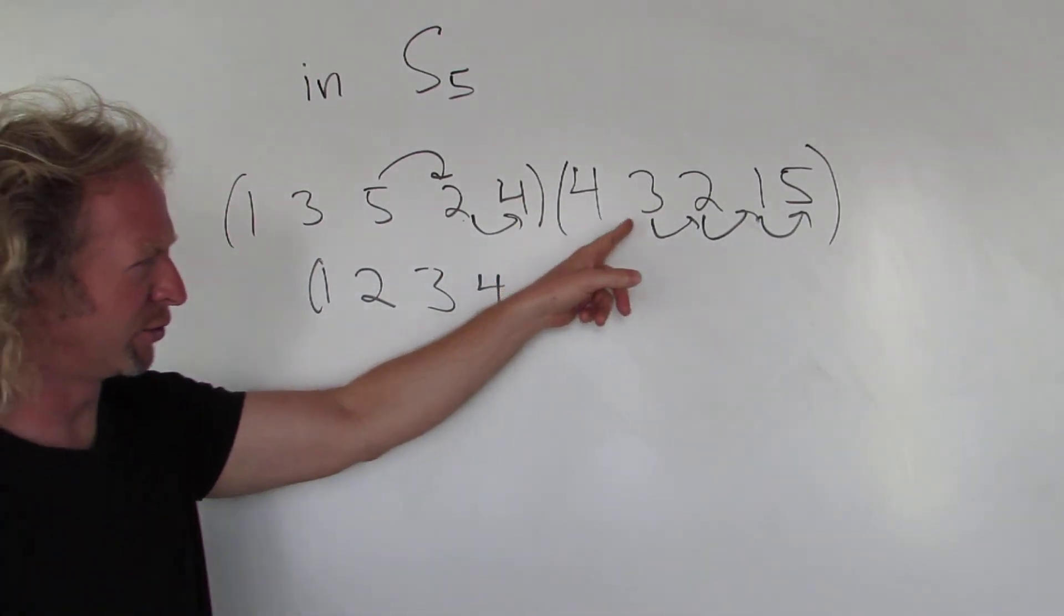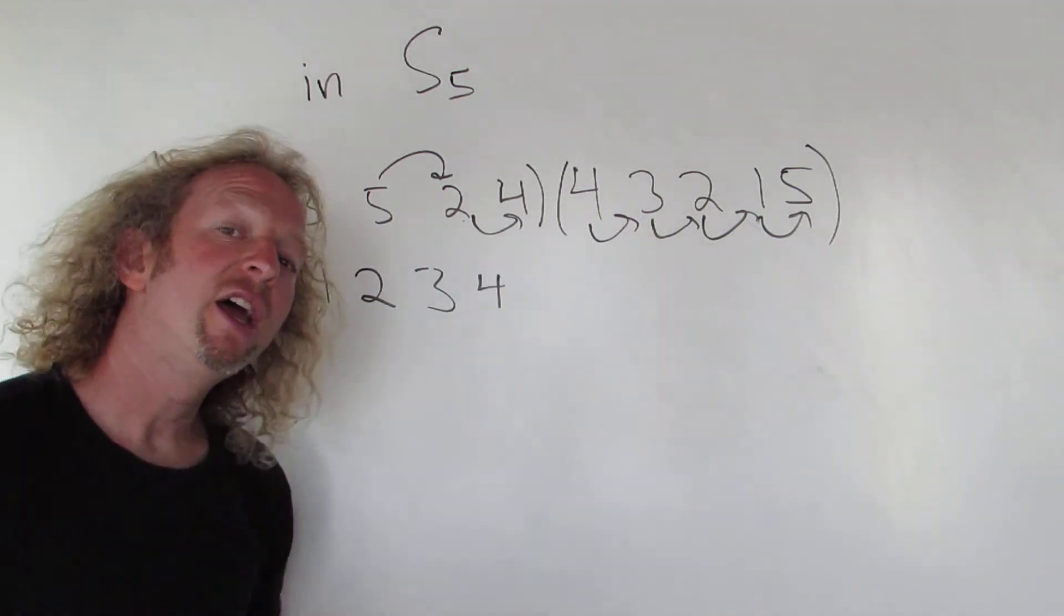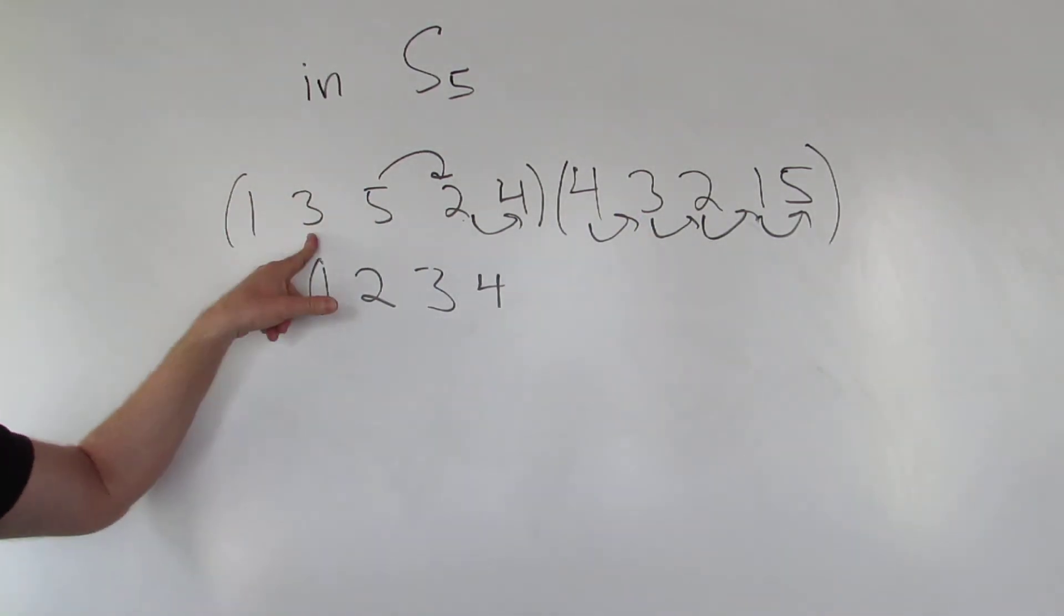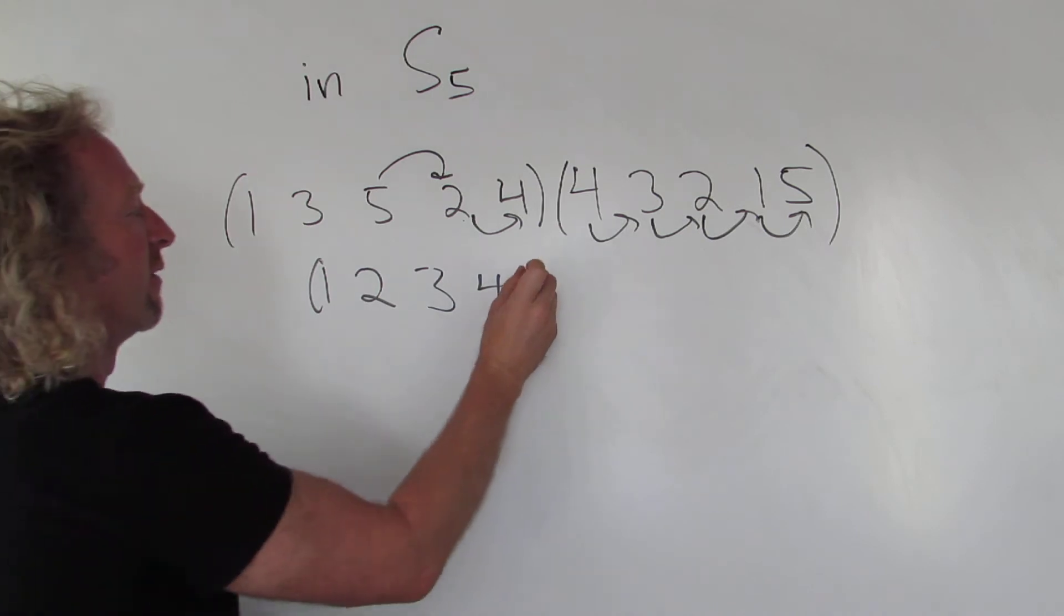Then you look for 4. 4 goes to 3. So 4 goes to 3. Where does the 3 go? You look over here. So 3 goes to 5. So 4 goes to 5.